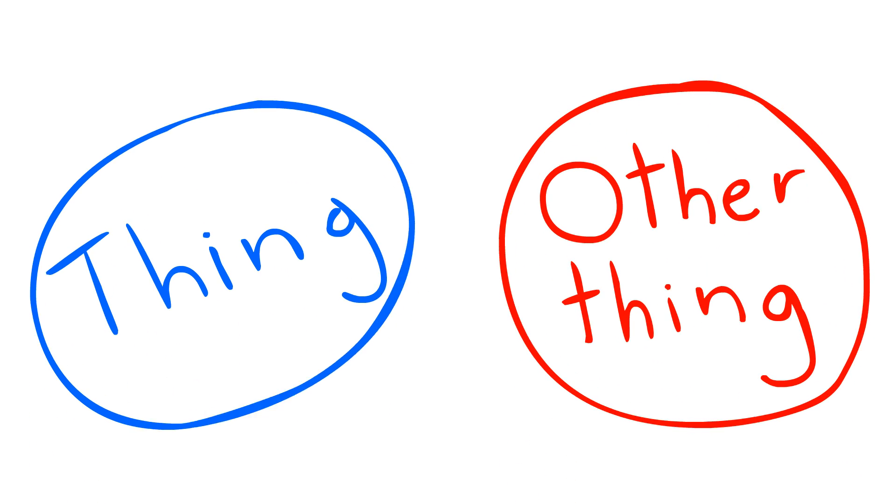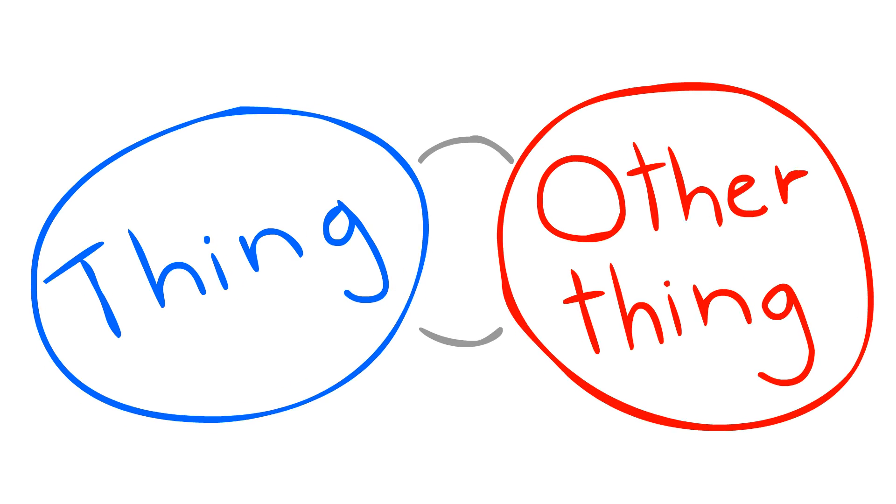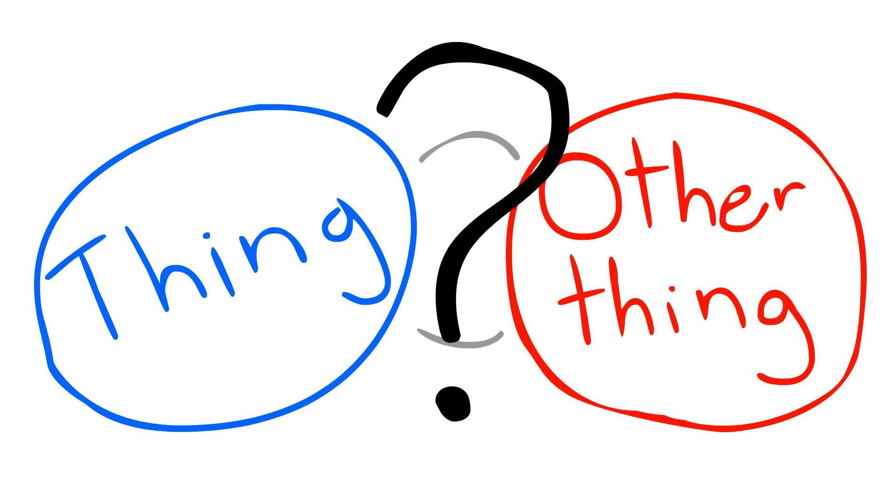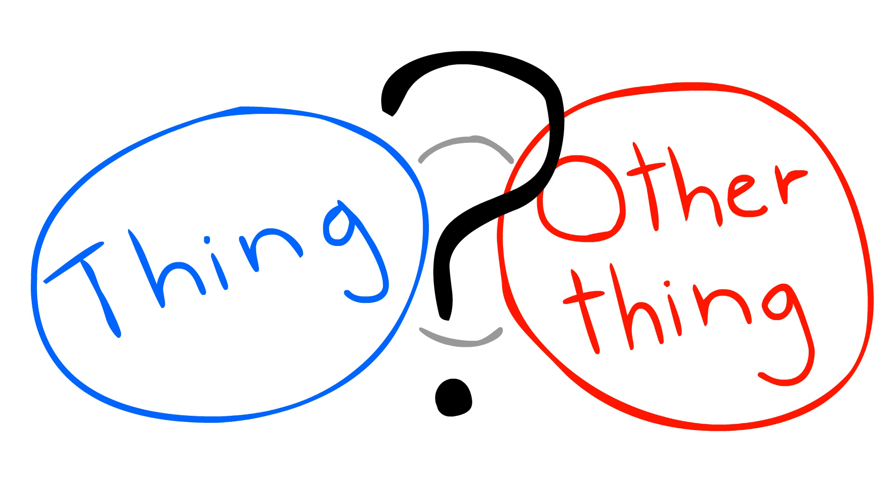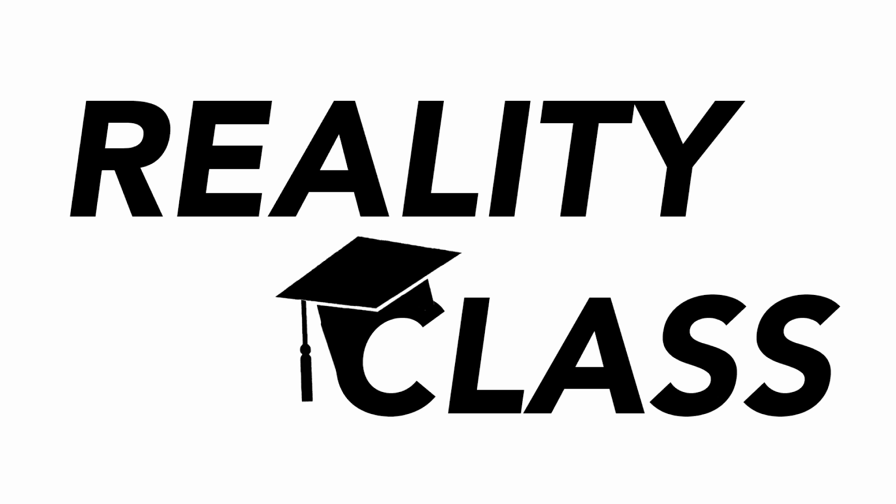Imagine for a second you have two things, and you think these two somethings are related to each other. How can you tell if your Thing 1 and Thing 2 have anything to do with each other or not? It's time for reality class!